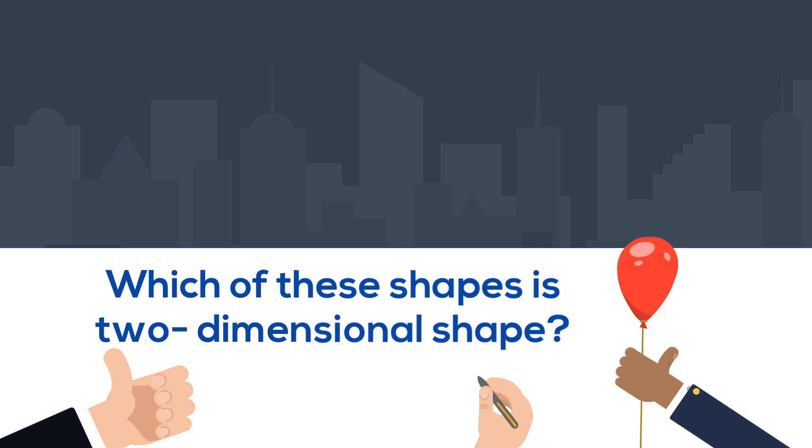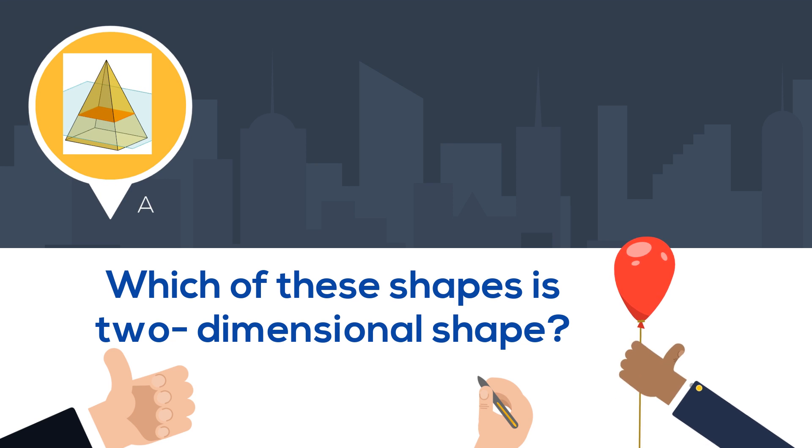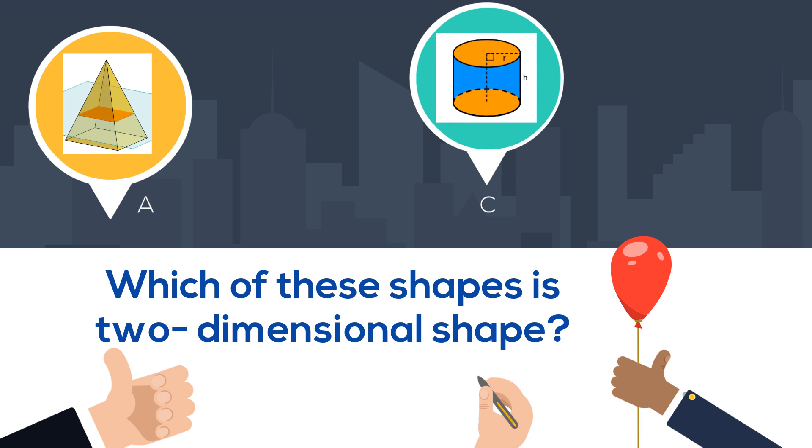Back to our original quiz. Which of these shapes is the 2D shape? It is not A because notice that the pyramid has height. A cylinder has height also, so it can't be C.